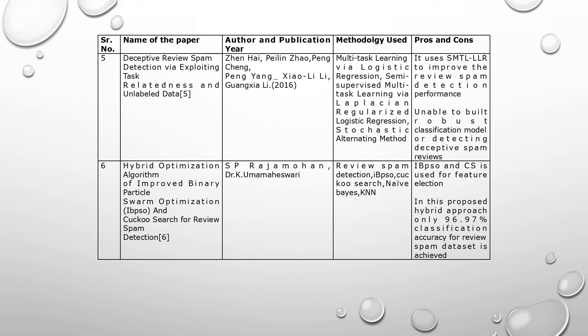The fifth paper is 'Deceptive Review Spam Detection by Exploiting Tasks, Readiness and Unlabeled Data.' Methodologies used are multi-task learning via logistic regression, semi-supervised multi-task learning via Laplacian regularized logistic regression, and a strategic alternating method. The pros and cons: it uses SMLLR to improve the review spam detection performance but is unable to build a robust classification model for detecting deceptive spam reviews.